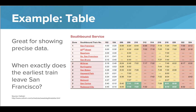Tables are great to use when you need precise data — when you actually need the number and not just the color or comparison with another number. This table shows the train times of a train leaving San Francisco. You definitely want precise values so that you don't miss the train, so a table makes sense to display this data. The colors are used as well, which might represent different ticket costs or whether the train is on or off peak. The earliest train leaves San Francisco at 4:55 in the morning — way early!